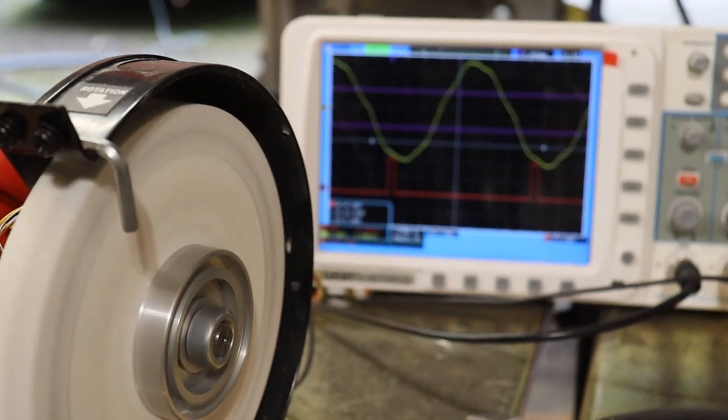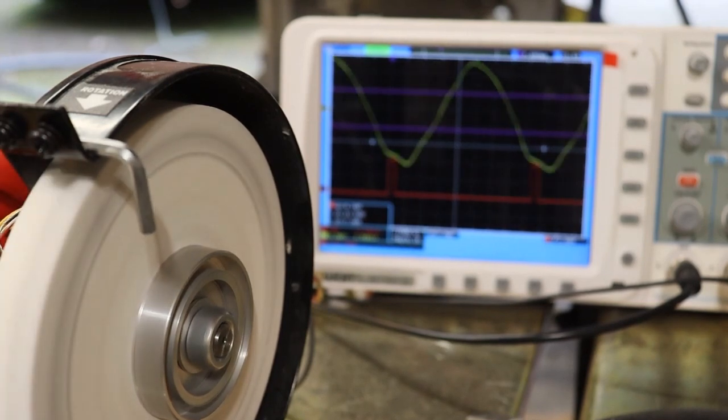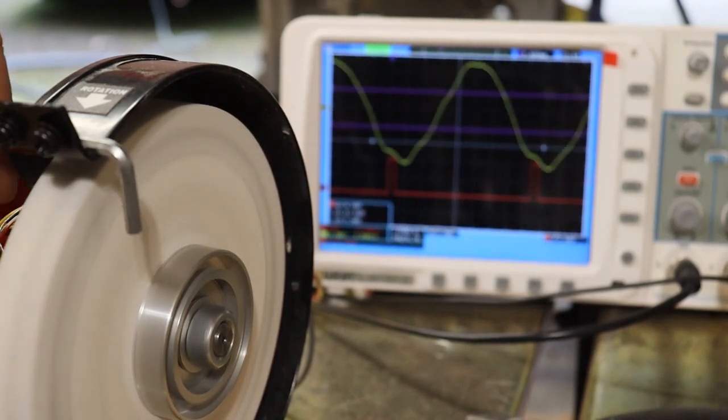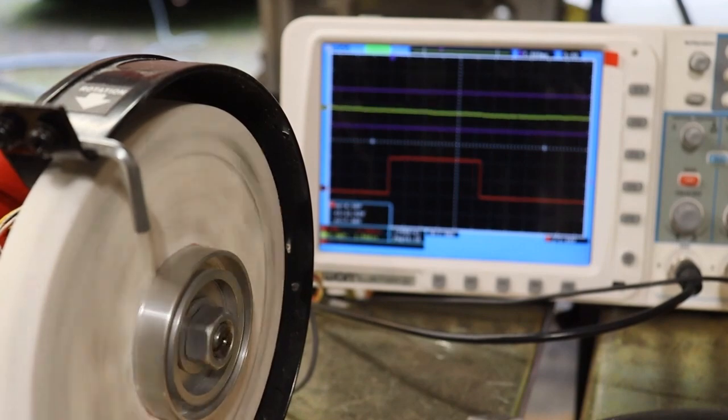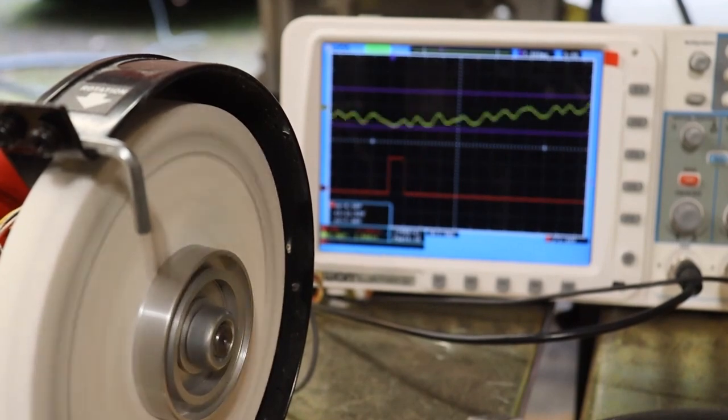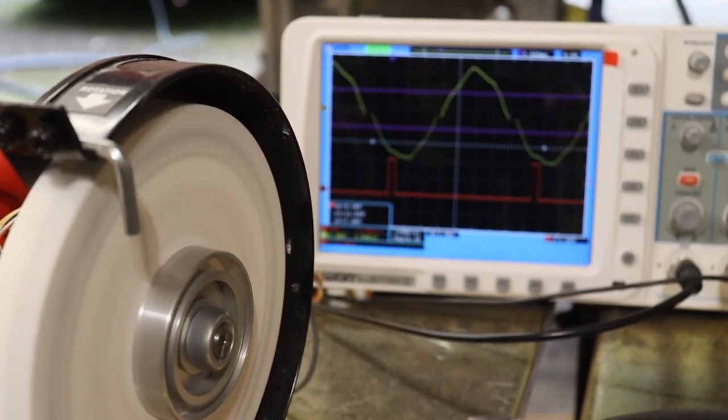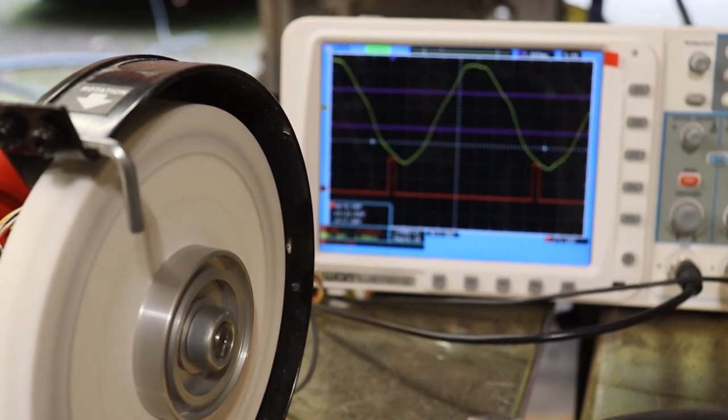The yellow trace is the accelerometer output signal. The red trace is the reference pulse signal from photosensor. We see peaks on red trace when the reflecting strip passes photosensor. The peak of yellow trace is located at the angle of the misbalance.